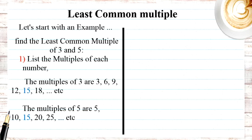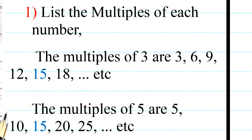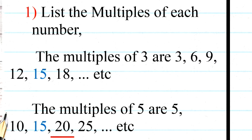We will start with a simple example: find the least common multiple between 3 and 5. I have three steps to follow. First, I will find the multiples of each number. Multiples of 3 are: 3, 6, 9, 12, 15, 18 — it's the table of 3. Then I have the multiples of 5: 5, 10, 15, 20, and so on.